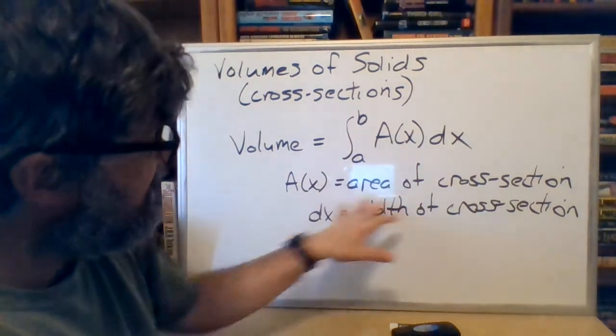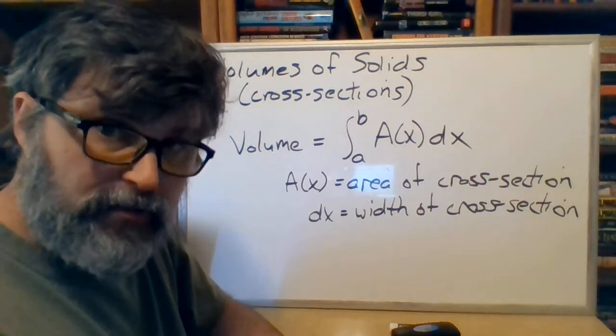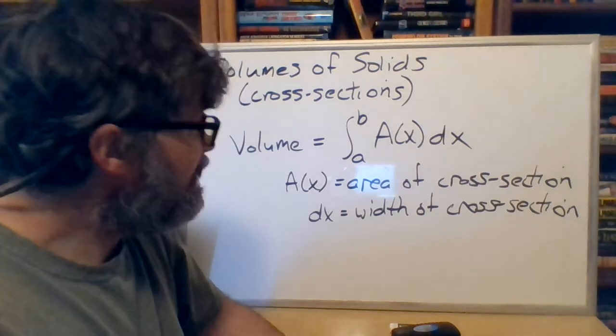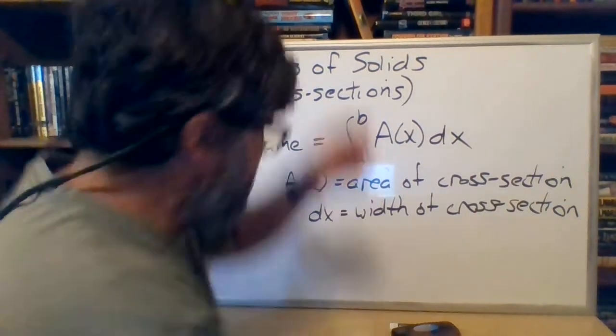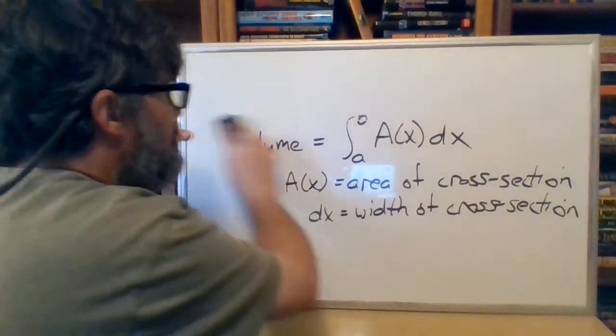All right, anyway, so this A(x) is the area of the cross-section, and that dx is the width of the cross-section. And I'm going to try and get a little more into this volume of solids using cross-sections with an example problem. Here we go.